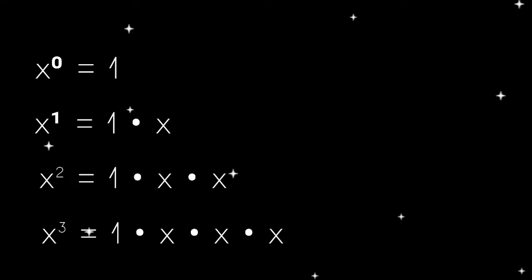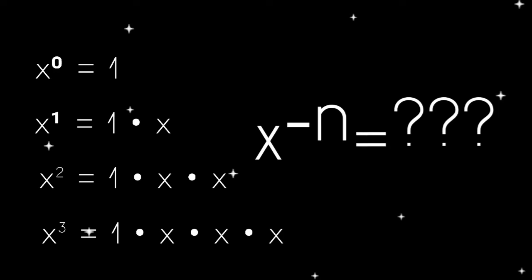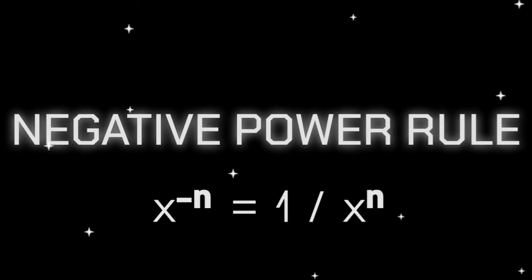But what about x raised to the power of negative n? Can you multiply a number various times negatively? That's why in this video we will tackle the negative power rule, where it states that x raised to the power of negative n equals 1 over x raised to the power of n.